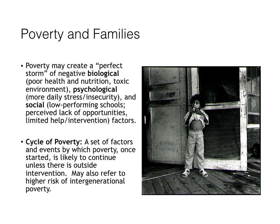All of these things together help create what economists and sociologists call the cycle of poverty — a set of factors and events by which poverty, once started, is likely to continue unless there is outside intervention. The cycle of poverty may also refer to a higher risk of intergenerational poverty, meaning that children born into poor households are at much higher risk of living in poor households as adults and bringing their own children into the world in poor households.